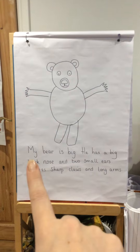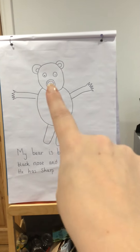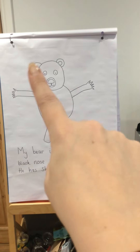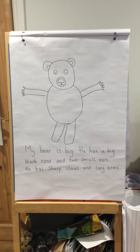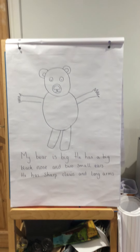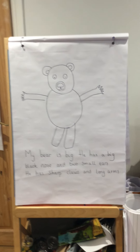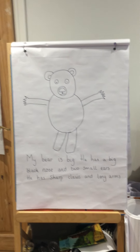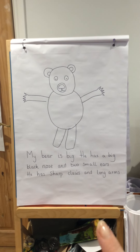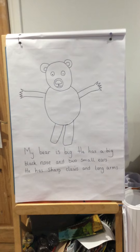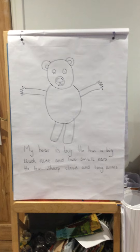Then you're going to have a go at describing your bear underneath. Mine says: 'My bear is big. He has a big black nose and two small ears. He has sharp claws and long arms.' So I've just had a go at describing what my bear looks like. Your job is to design your own bear first, think about how you want him to look, and then write some sentences about your bear saying what he looks like.